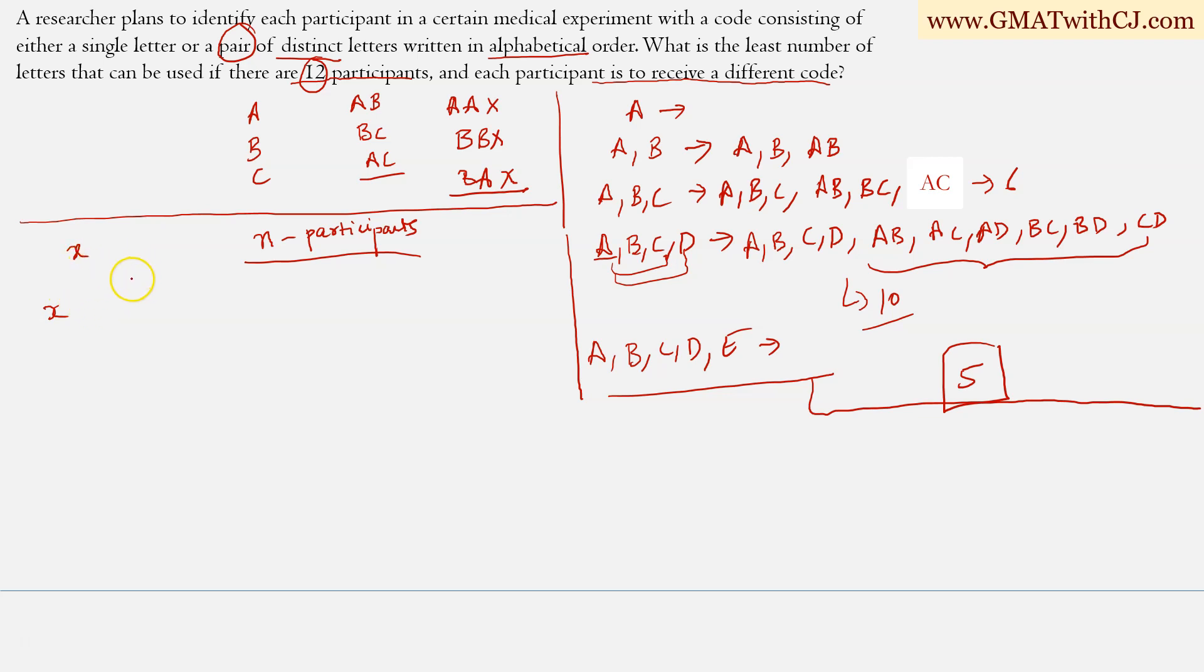And then another way to generate the codes is by using two of the letters at a time. And the two letters need to be distinct and they need to be written in alphabetical order. Now the way to generate a code consisting of two distinct letters is that you have two places here. For the first place, you have X options. You can have any of the letters. Now for the second place, you have X minus one options, right? So the number of codes is X into X minus one.